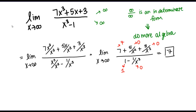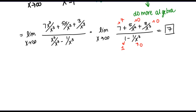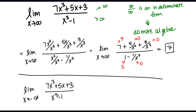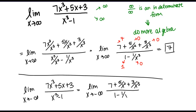This tells me about the end behavior on the right-hand side of my graph. But let's say I also want to know about the end behavior on the left-hand side. In that case, I'd like to look at the limit as x goes to negative infinity of the same function. We're going to reuse the work we already did, skipping straight to the form 7 plus 5 over x squared plus 3 over x cubed, all over 1 minus 1 over x cubed, and look at the limit as x goes to negative infinity.